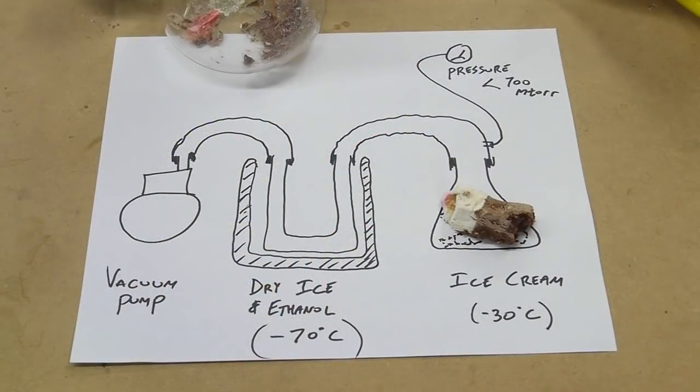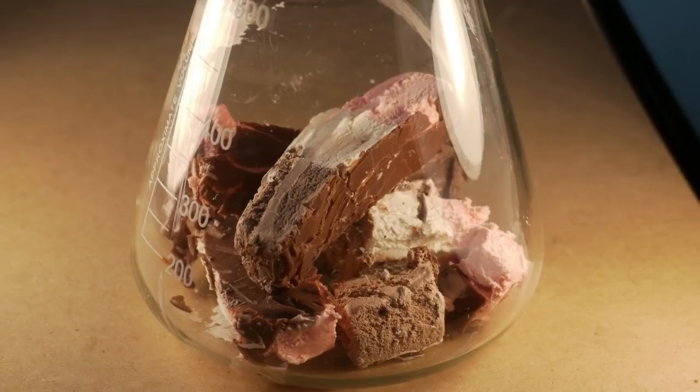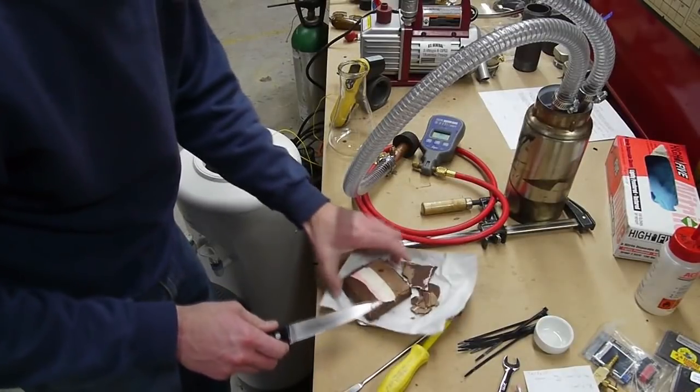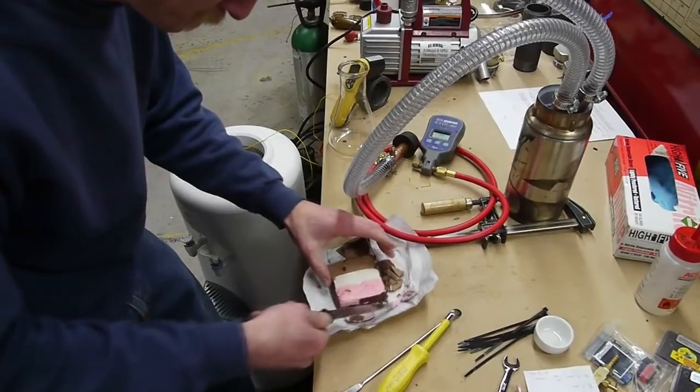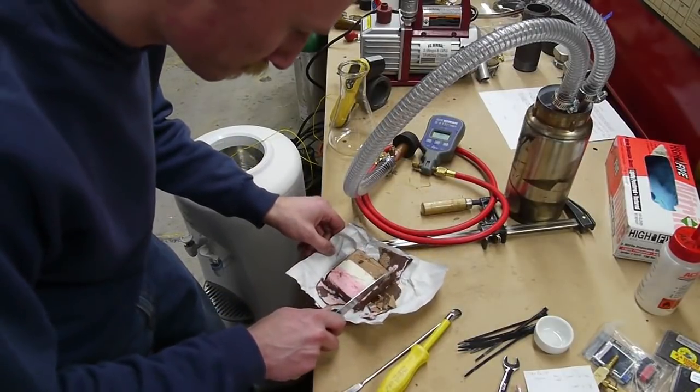I should add that the chocolate was a problem. The chocolate doesn't freeze-dry. It stays runny even after all the water has been removed. It's probably because of the high fat content. In the future if I do this again I would either use ice cream that has no chocolate on it or just do a better job of cutting it off. Of course I had to do Neapolitan because it's astronaut ice cream.